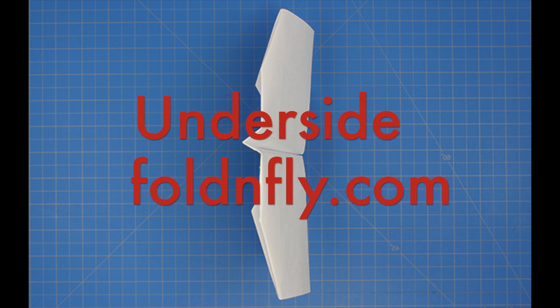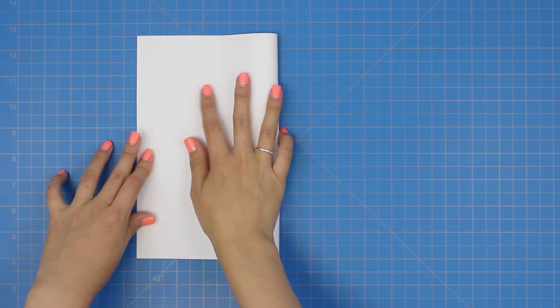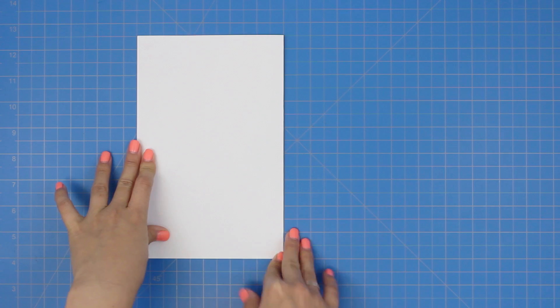Today I'm going to show you how to create the underside plane. First, fold the plane in half and then fold it in half again.